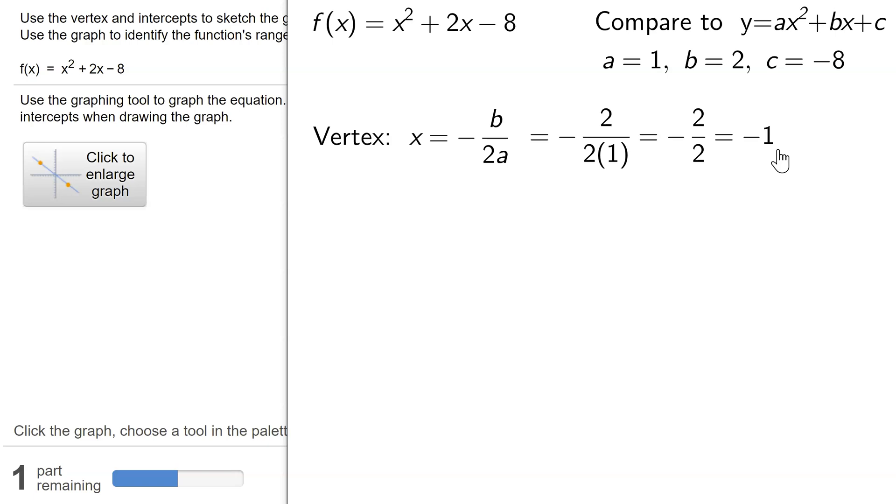To find the y coordinate of the vertex, I have to plug -1 into this formula. So f(-1) = (-1)² + 2(-1) - 8, and then I simplify that. (-1)² is 1, 2 times -1 is -2 minus 8, so this gives us the y coordinate being -9. So my vertex is at (-1, -9).